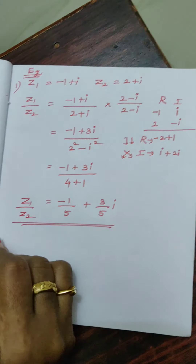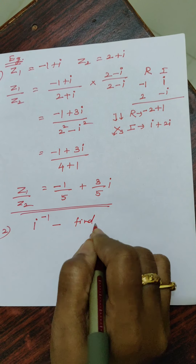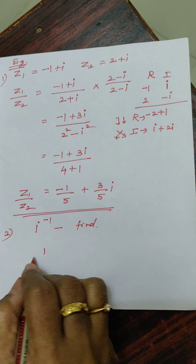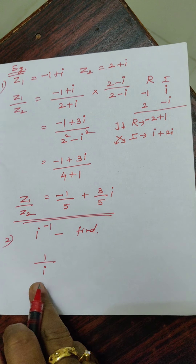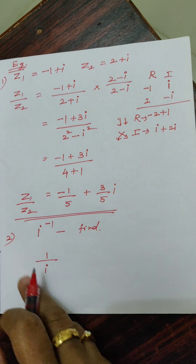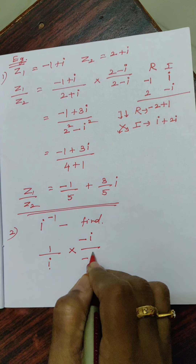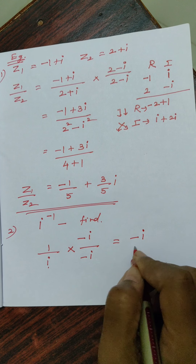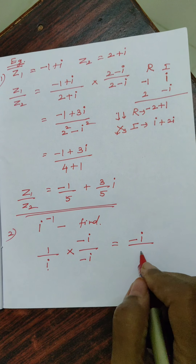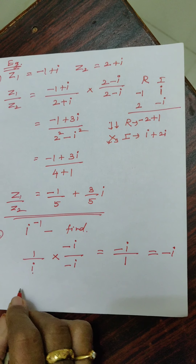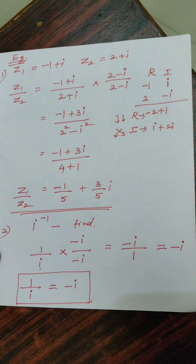One more example: find i to the power minus 1. i to the power minus 1 is 1 by i. To find 1 by i, take the conjugate — change the sign of the imaginary part, giving minus i over minus i. So the answer is minus i divided by i times i, which is minus i divided by i squared equals minus 1. Therefore 1 by i equals minus i.